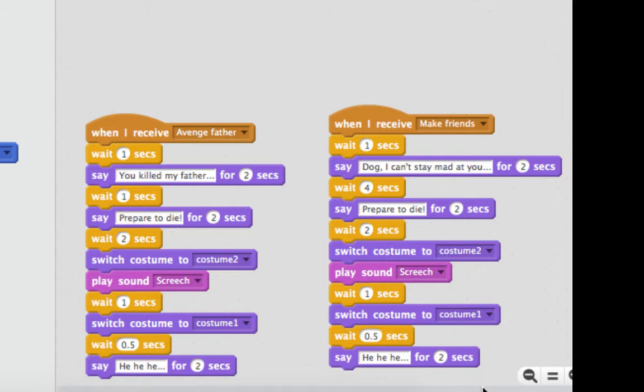Switch back and laugh. That's what happened there. On the right-hand side, the Make Friends storyline happens. And it says, you know, Dog, I can't stay mad at you, but then surprise, prepare to die anyways, and do that stuff. So two different storylines happen.